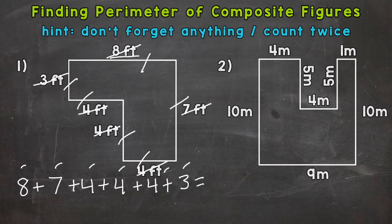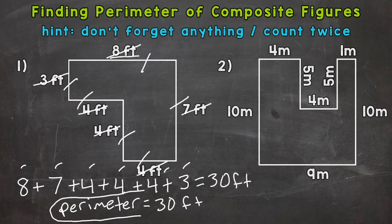Let's add: eight plus seven is 15, plus four is 19, plus another four is 23, plus another four is 27, plus three gives us 30 feet. So our final answer is perimeter equals 30 feet.